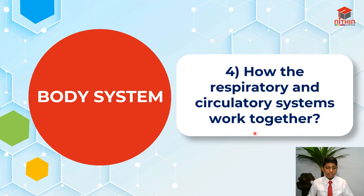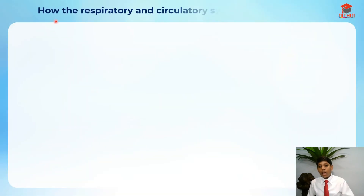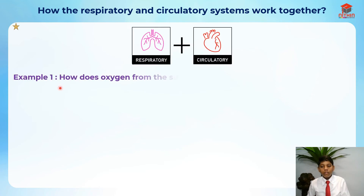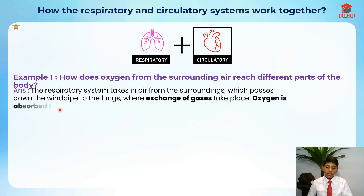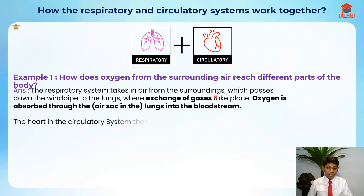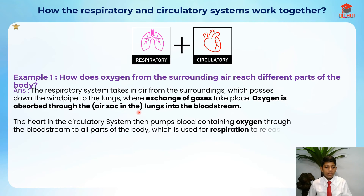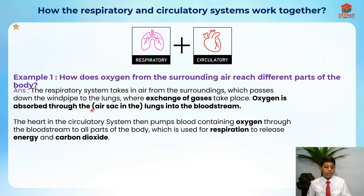The next question covers how the respiratory and circulatory systems work together — there are two examples. Example one: how does oxygen from the surrounding air reach different parts of the body? The respiratory system takes in air from the surroundings, which passes down the windpipe to the lungs where exchange of gases takes place. Oxygen is absorbed through the air sacs in the lungs into the bloodstream. P6 students should mention air sacs for the PSLE exam if such questions appear.